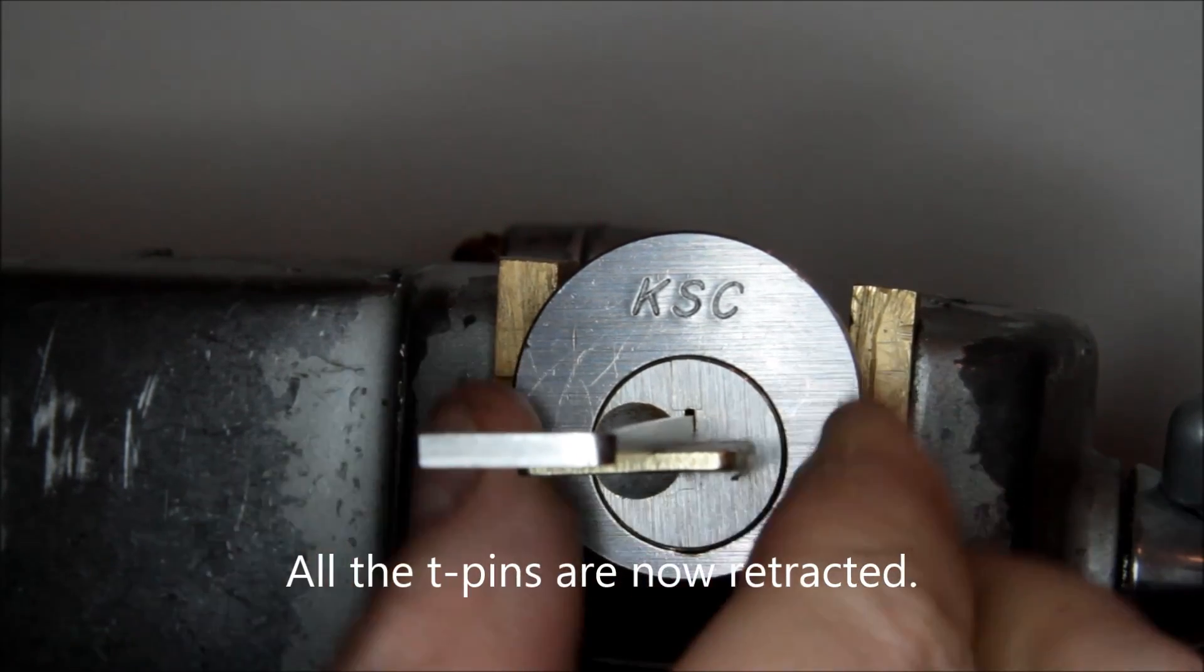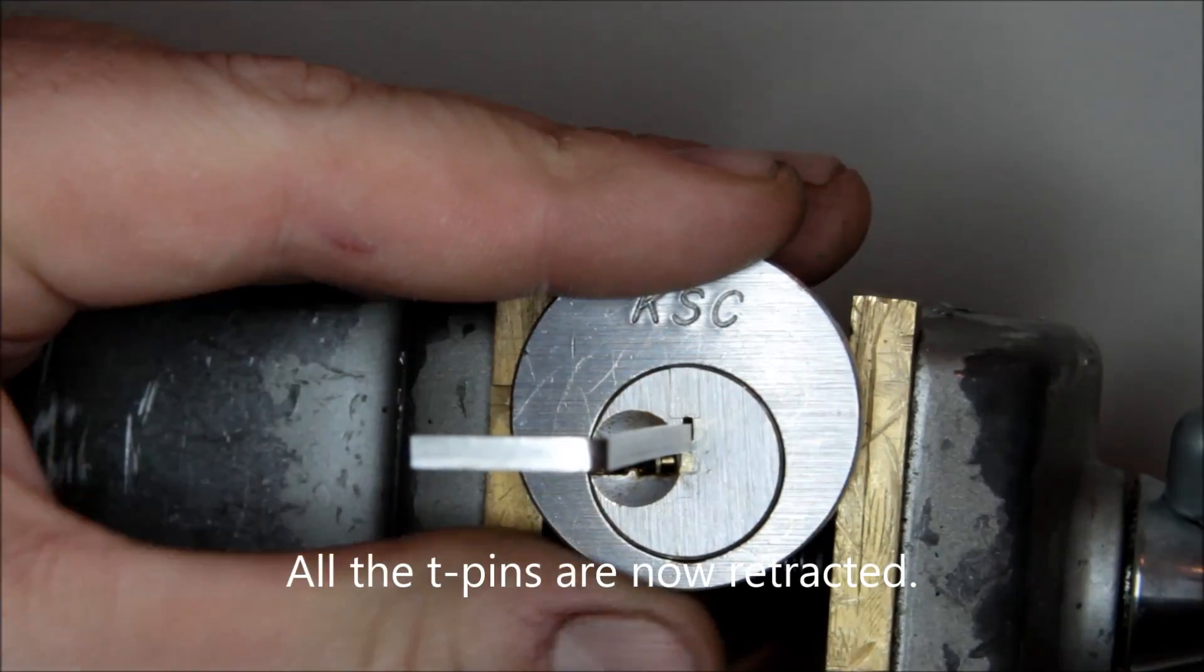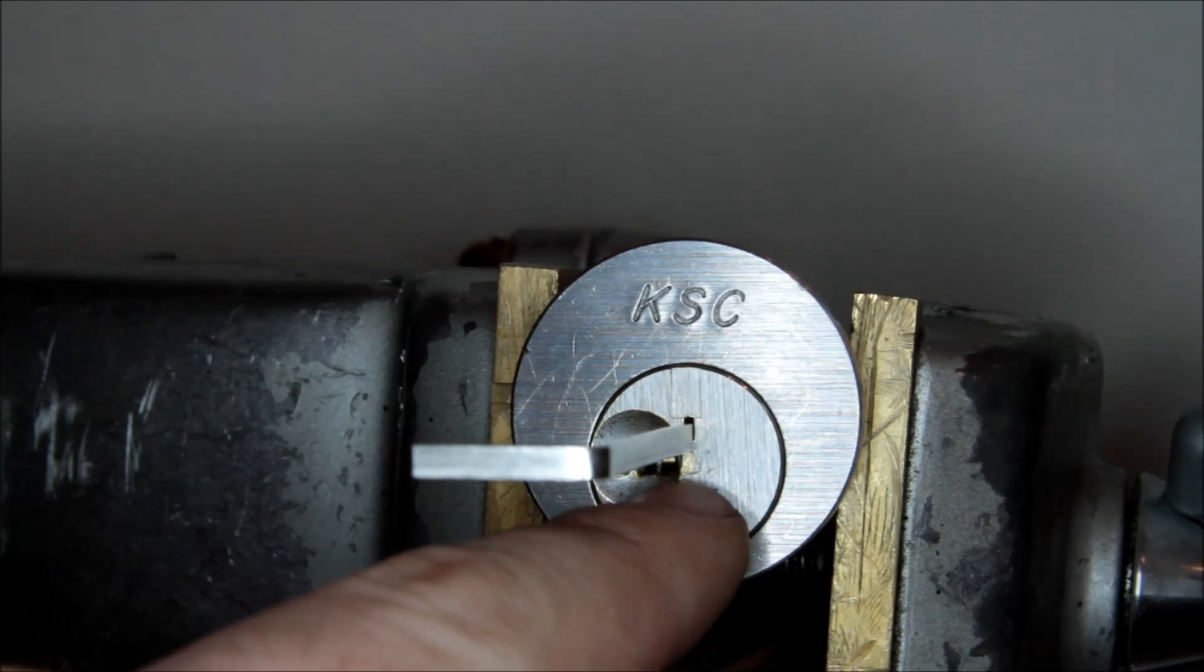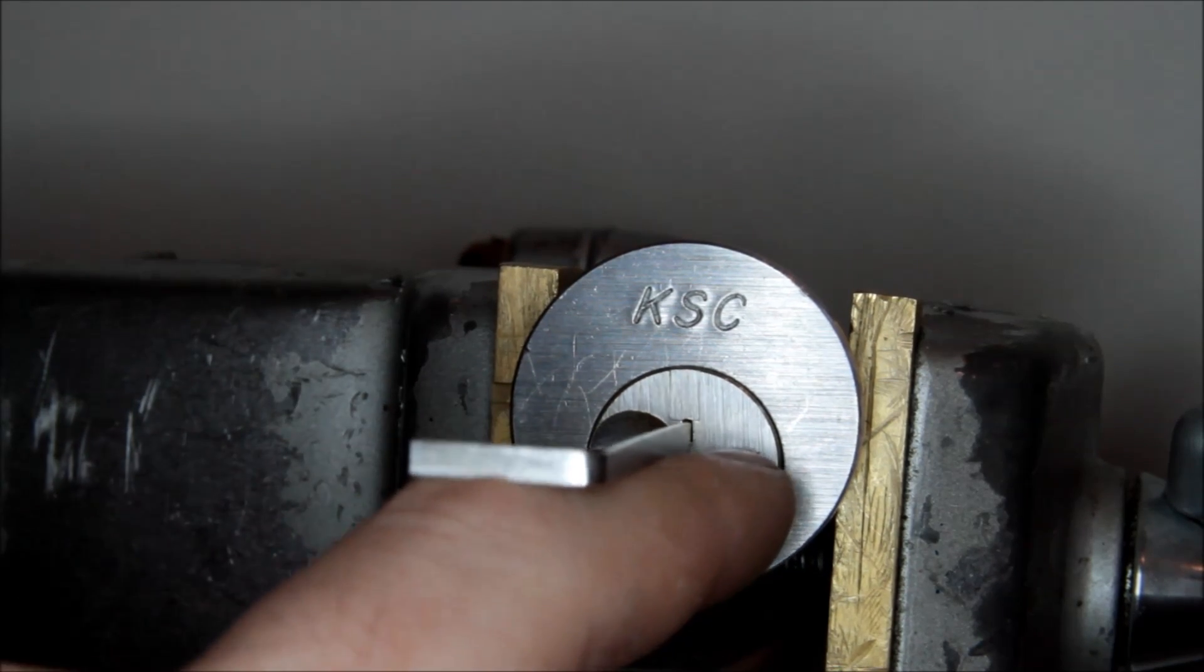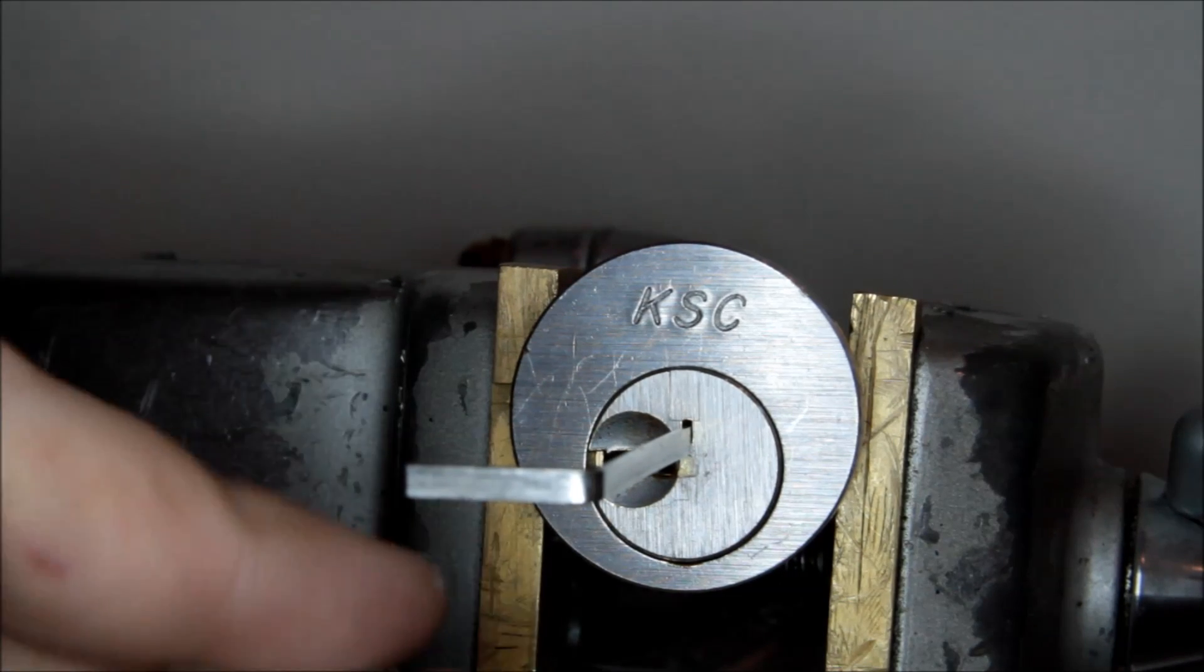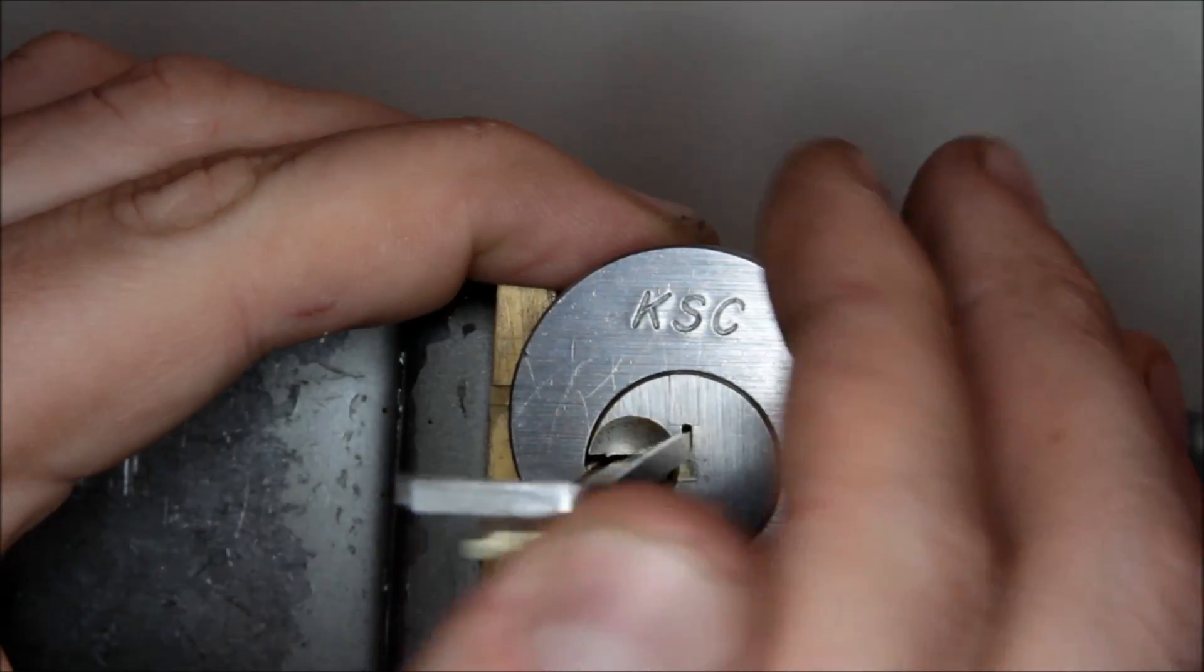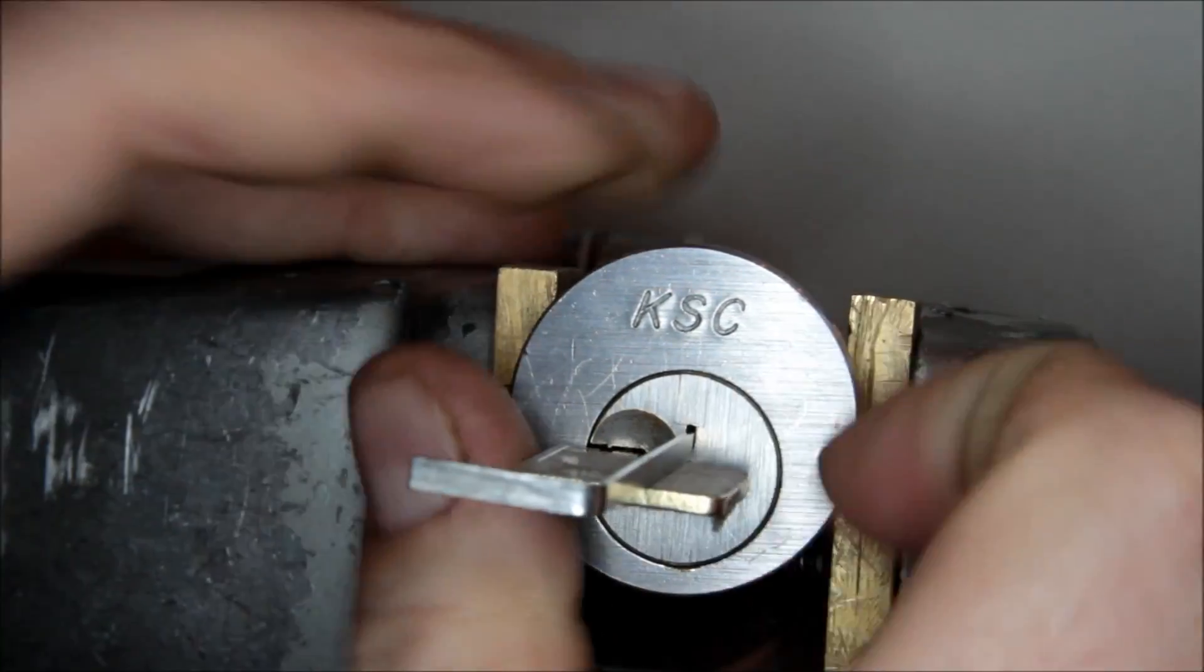So now I can actually take the key, if I get it aligned properly, take the key completely out and put a different key in, at which time the pins will adjust to the bitting of the new key. Put that in, take the tool out and put it all back together and turn it back to lock and I'm done. So it's kind of a nice system in that perspective.